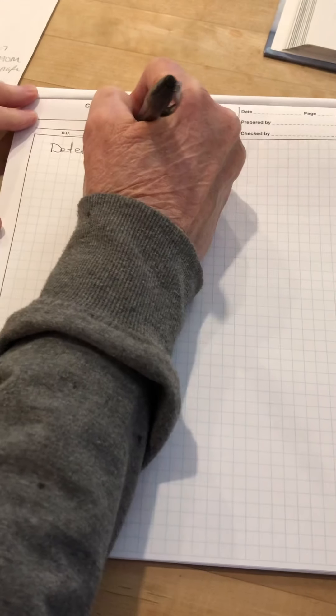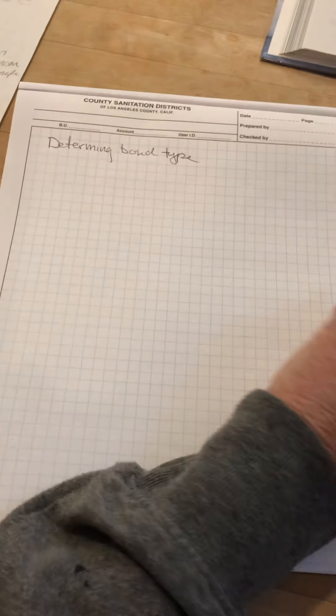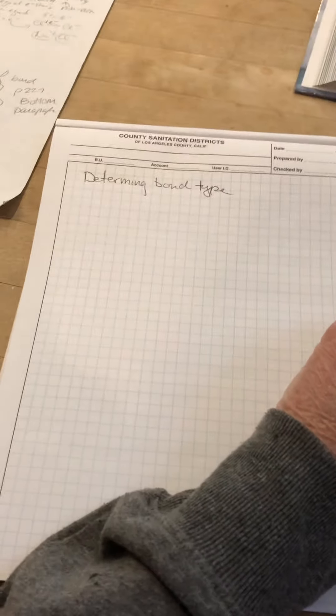Determining bond type. If you haven't noticed already, I am going out of order in the book. You're going to have to skip around a little.